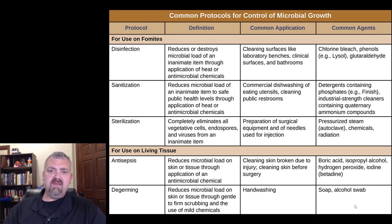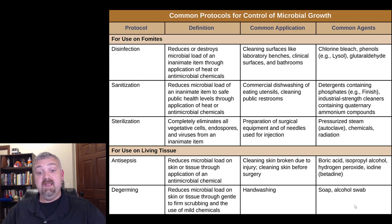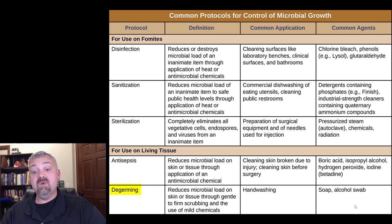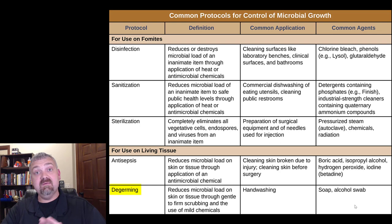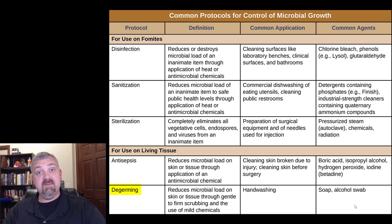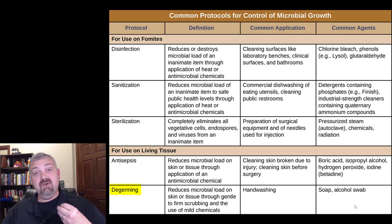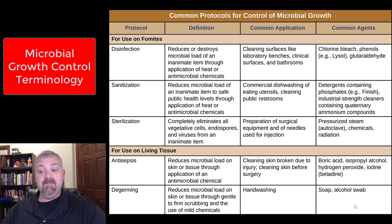The last term on the list is de-germing. De-germing is the physical or mechanical removal of microbes. Think about washing your hands — soap isn't a powerful antiseptic, it's a de-germing agent that helps physically remove microbes. Similarly, using an alcohol wipe prior to giving an injection functions as an antiseptic but also physically and mechanically removes microbes.